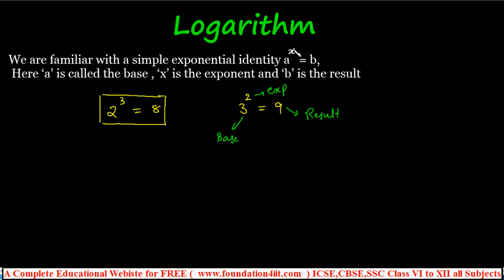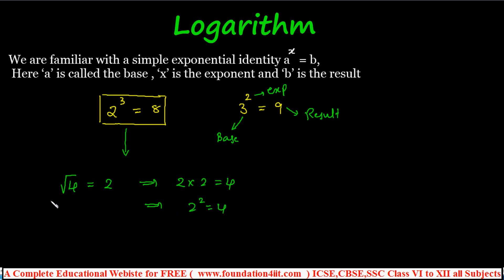So a to the power x is equal to b: a is the base, x is the exponent, and b is the result. Such examples can also be written in logarithmic form. Just as square root of 4 equals 2 can be written as 2 squared equals 4, similarly a to the power x equals b can be expressed in logarithmic form as log b to the base a is equal to x.